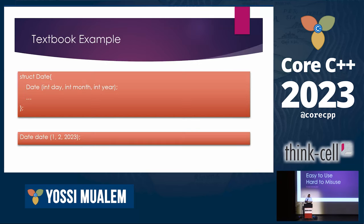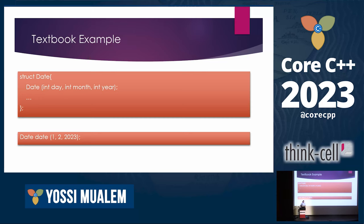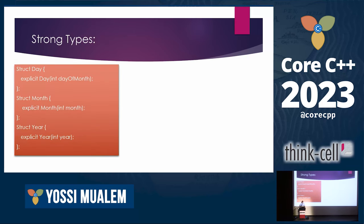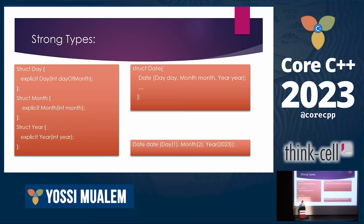When you look at easy-to-use, hard-to-misuse, you most likely come to this example. We have the class date that takes three integers for day, month, and year. When we use it, it's not very clear if I mean February the 1st or January the 2nd. The solution everyone comes with is to use strong types — three supplementary classes for day, month, and year. Now our class date takes instances of those classes, and because those classes have explicit constructors, we can't just send plain integers. Now it's very easy to see that what I mean is February the 1st.